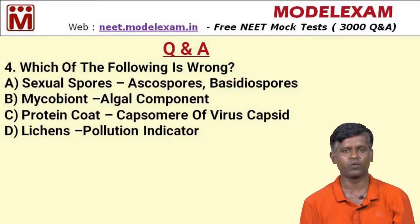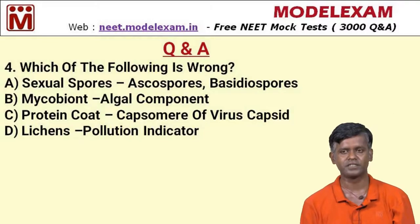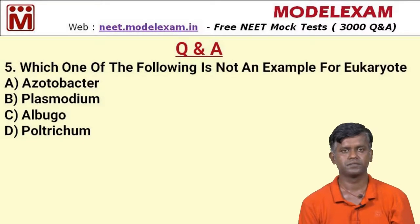Option A — sexual spores are ascospores and basidiospores — is true. Option B is incorrect: mycobiont is given as the algal component, but mycobiont actually refers to the fungal component of lichens. Lichens have both algae and fungi — the algal component is the phycobiont and the fungal component is the mycobiont. So option B is the wrong match and is the correct answer. Option C — protein coat consisting of capsomeres forming a capsid — is true. Option D — lichens as pollution indicators — is true.